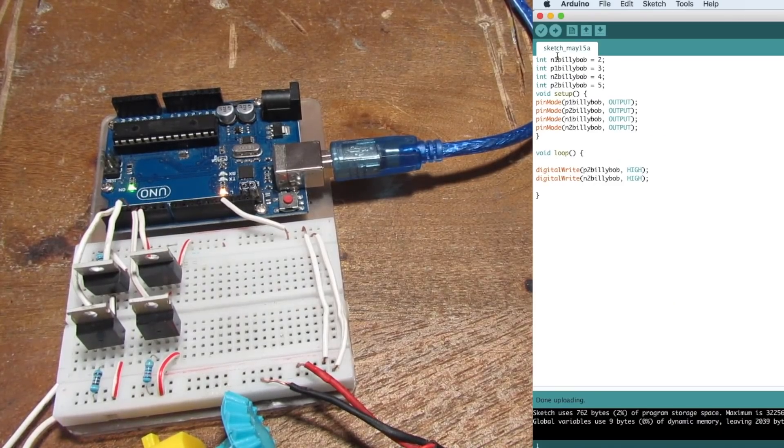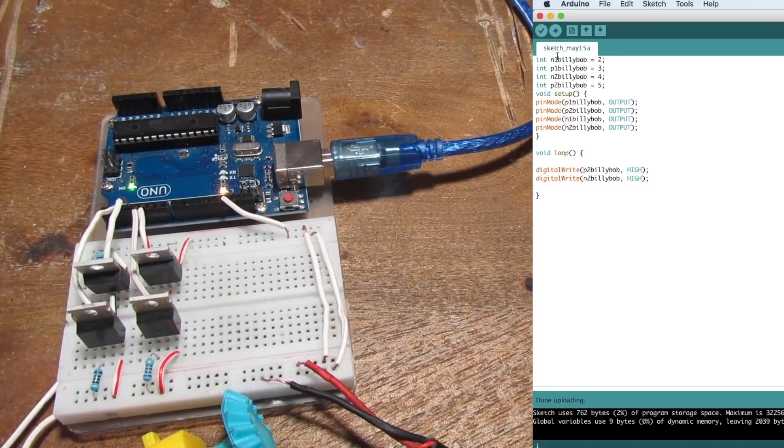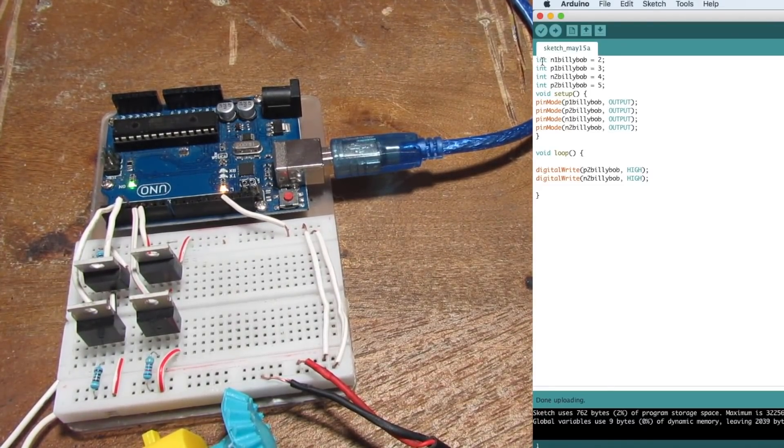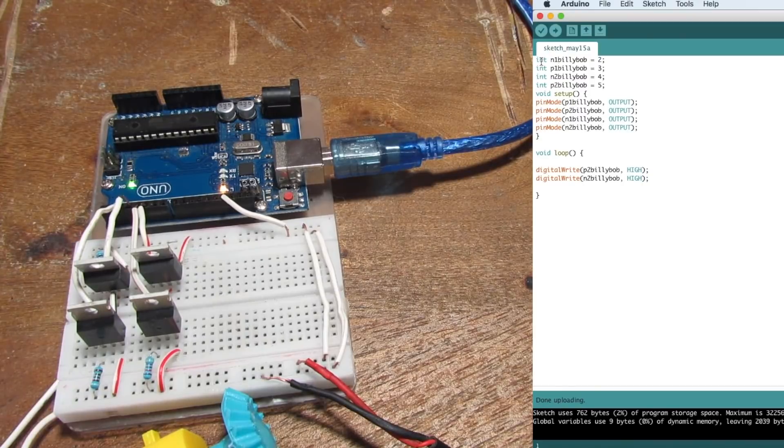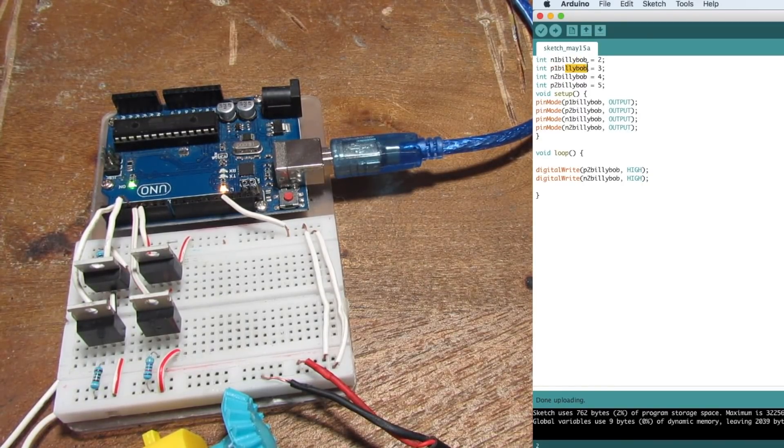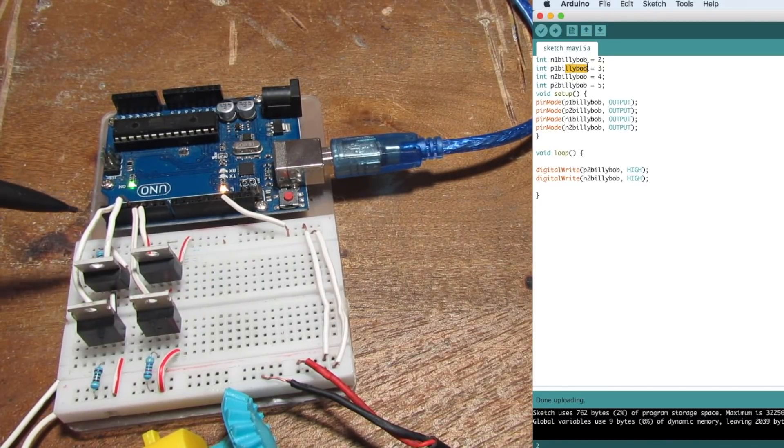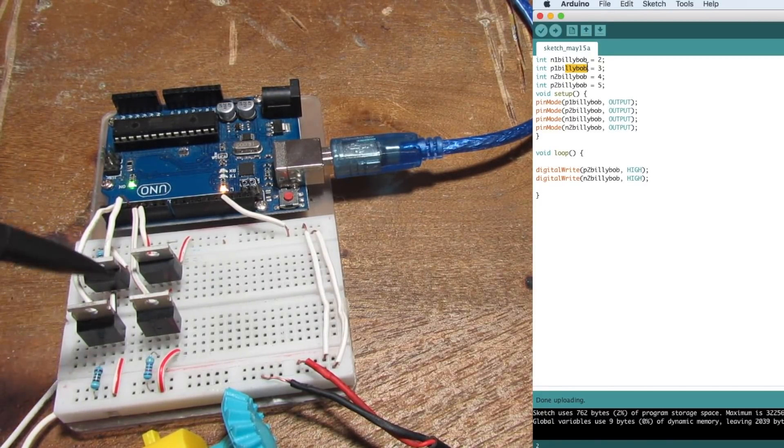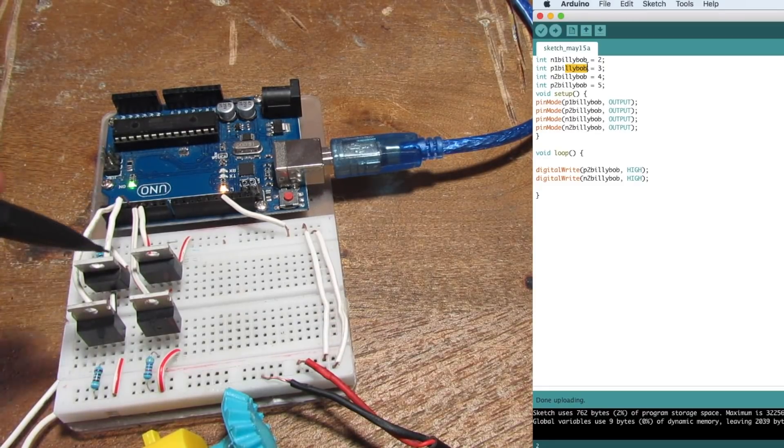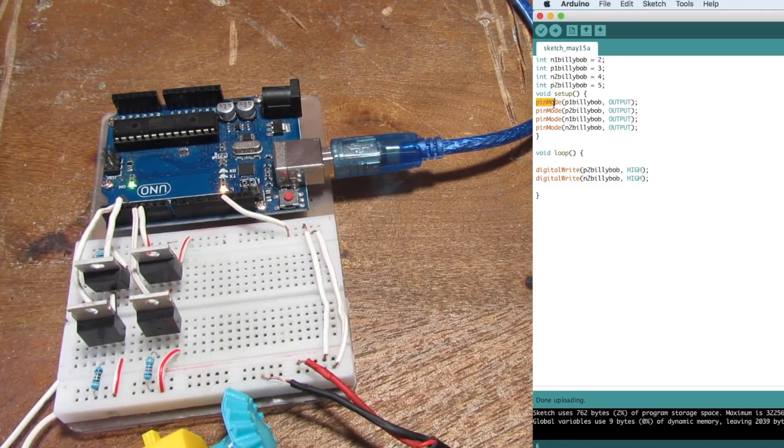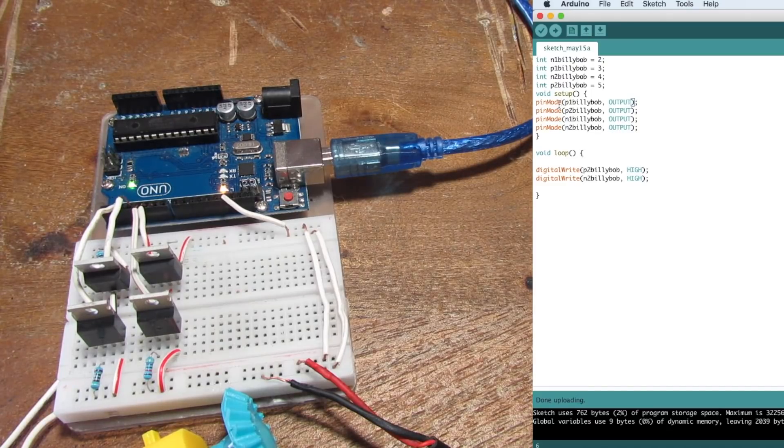Okay, so I want to talk about some of the code real quick. So I have the first N channel going to pin 2, so we are initializing all of the N and P channel MOSFETs over here and assigning them pins. So the first P channel I have going to pin 3, and the second N channel is going to pin 4, and P channel number 2 is going to pin 5.